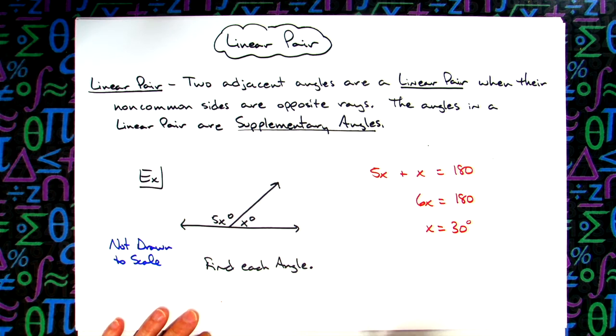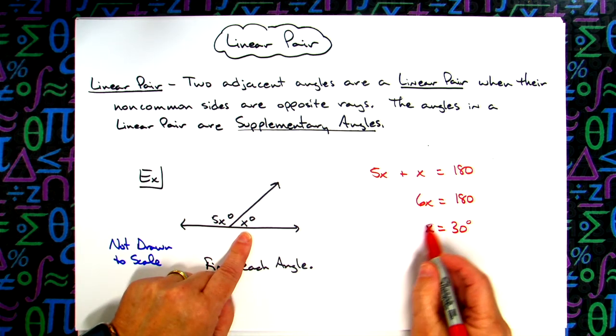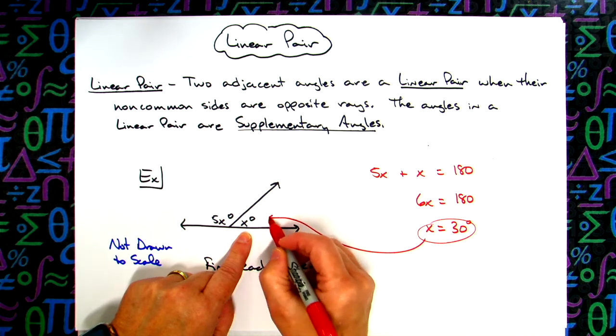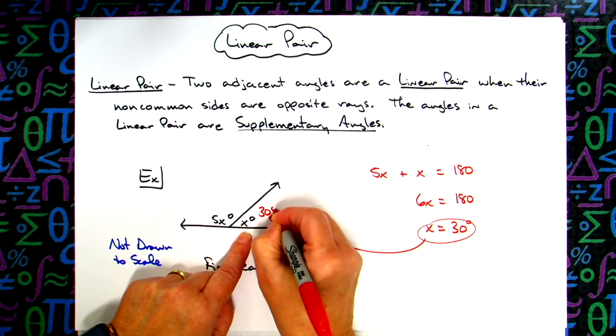Now knowing that x equals 30, I can plug this value back in for this angle, so which makes this 30 degrees.